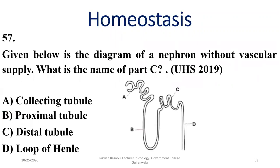Question 57: Given a diagram of the nephron, the name for structure C is the distal convoluted tubule. Charlie is the right option.